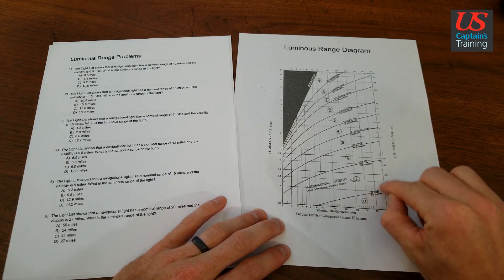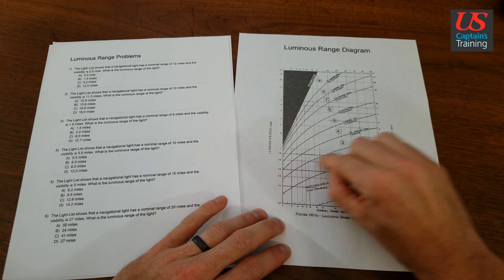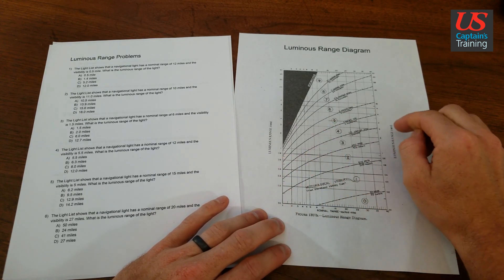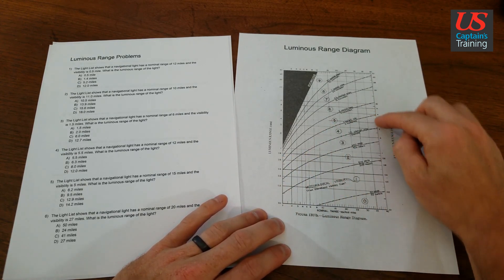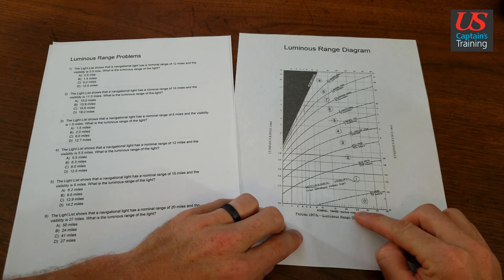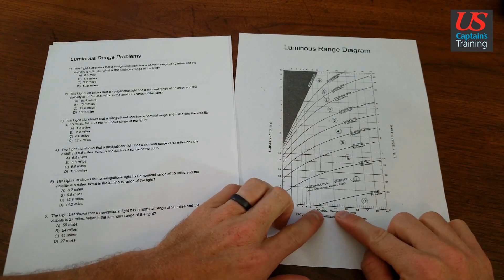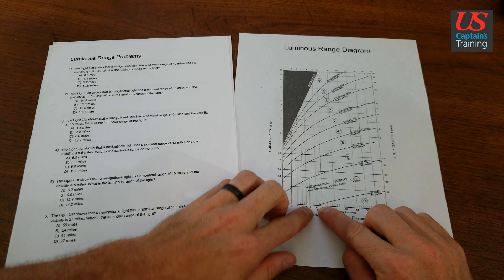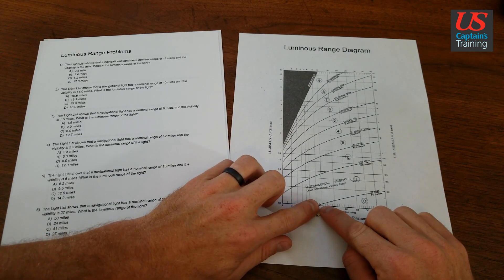So we have nominal range down here. These are visibility curves. See them? And then this side gives us luminous range. So we get a nominal range. If our nominal range is 10 and our visibility is 0.5,